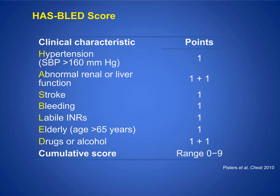The HASBLED scoring system was developed in 2010. It looks at factors including uncontrolled hypertension, abnormal renal or liver function, history of prior stroke, prior bleeding episodes anywhere — brain or GI — labile INRs, elderly age, and drug or alcohol use. These are all factors that predict a patient's risk of bleeding and should be mentioned in the notes. When filling out the registry forms, you can still capture these numbers.